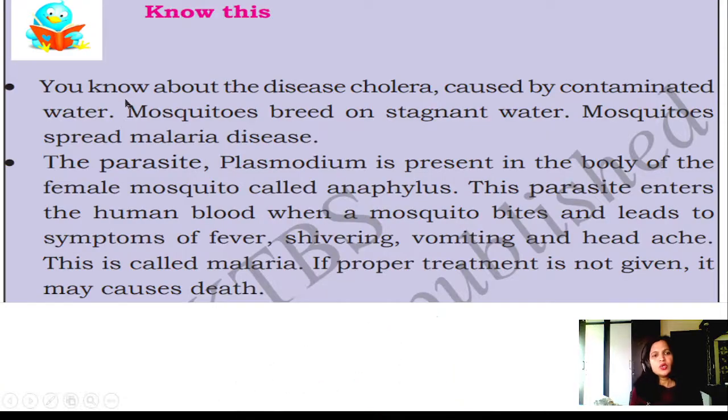You know about the disease cholera caused by contaminated water. Mosquitoes breed on stagnant water. Mosquitoes spread malaria disease. The parasite plasmodium is present in the body of the female mosquito called anopheles. This parasite enters the human blood when the mosquito bites and leads to symptoms of fever, shivering, vomiting, and headache. This is called malaria. If proper treatment is not given, it may cause death.